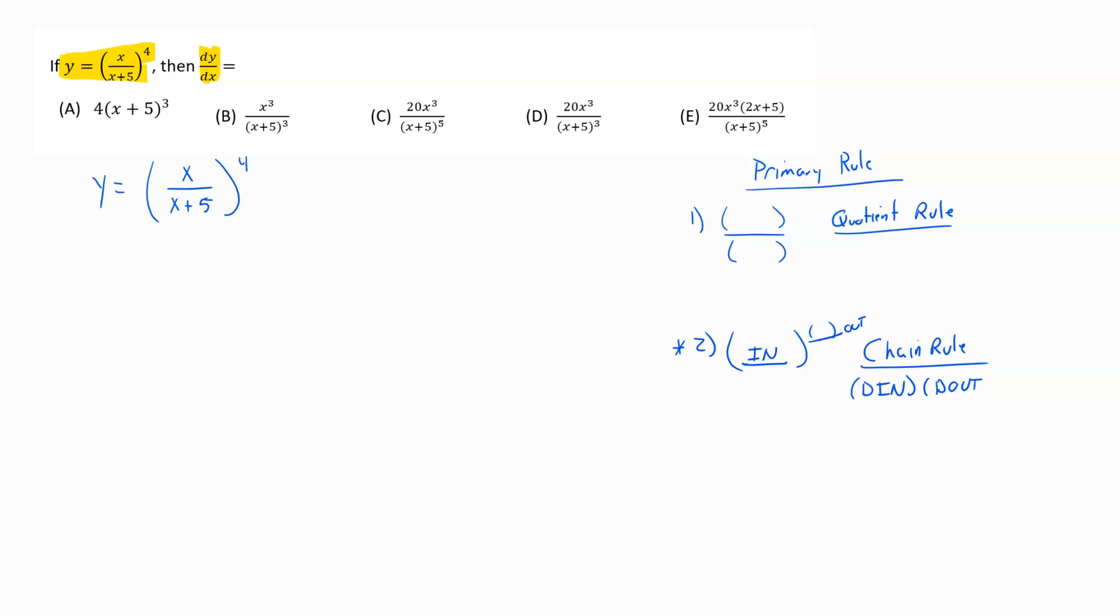As we break this problem down, when I look at just my inside piece, the in is x over x plus 5. How do I find the derivative of that? How do I find my d in that I need to follow my chain rule? This is where you run into your secondary rule. You can see now I'm looking at two things being divided. So in order to find the derivative of this piece, I'm going to follow that quotient rule.